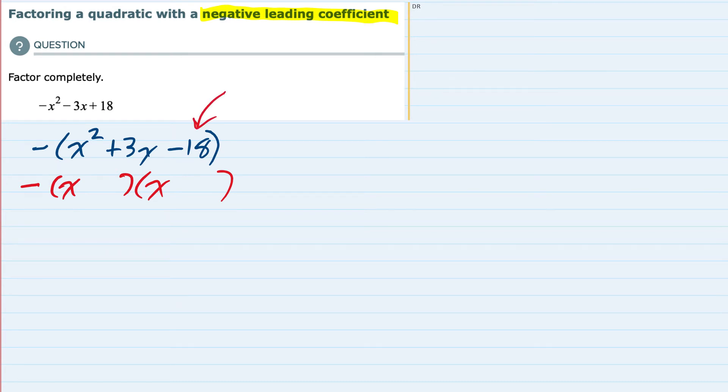But for the minus 18, I do have a couple different options. I could go with 1 and 18, 2 and 9, or 3 and 6.